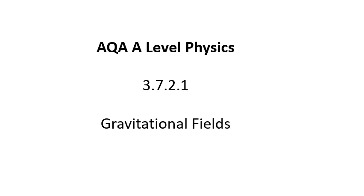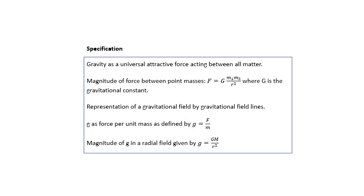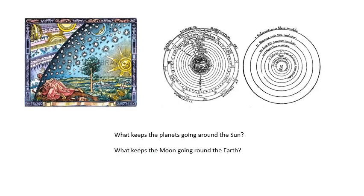AQA A-level physics, gravitational fields. This bit of the specification is what we're going to be doing. So, big question: what keeps the planets going around the sun? What keeps the moon going around the earth?